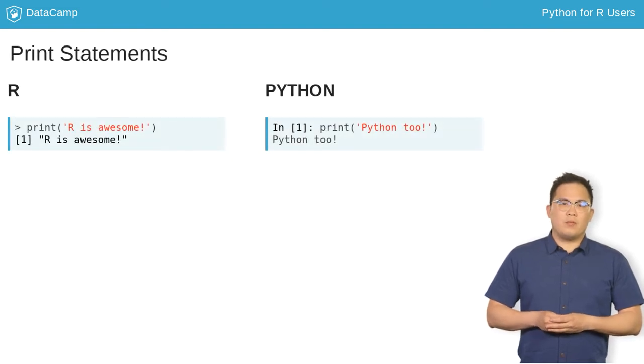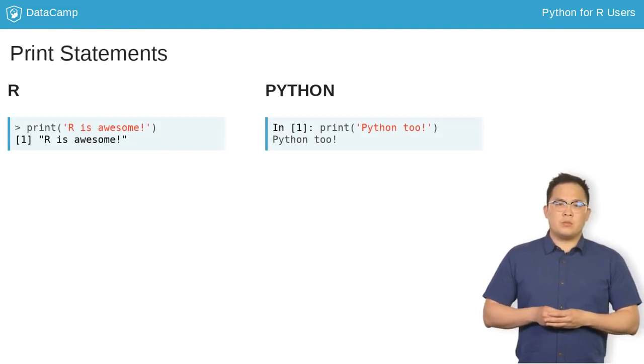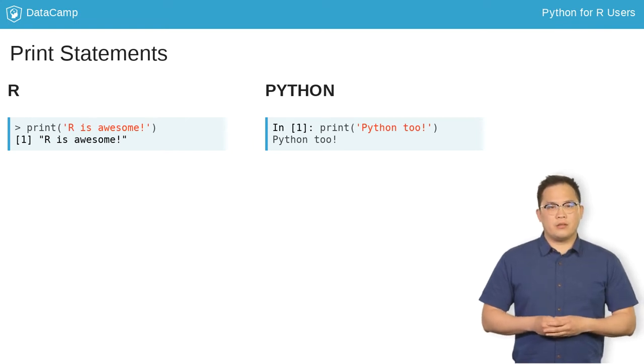When scripting in Python, it is necessary to explicitly use the print function to print the objects.